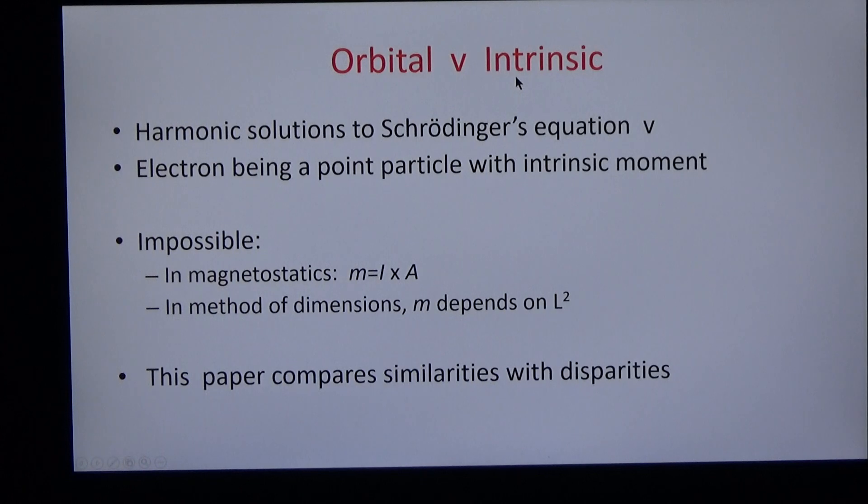By contrast, intrinsic spin is a property of the electron being a point particle with intrinsic moment. The second of these is impossible for two reasons.